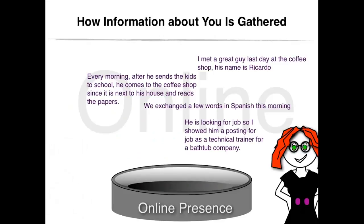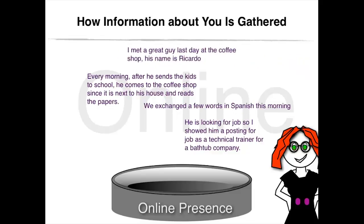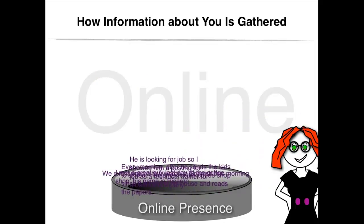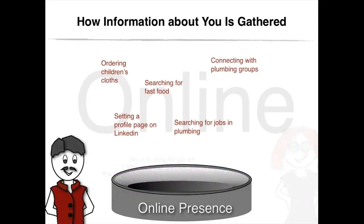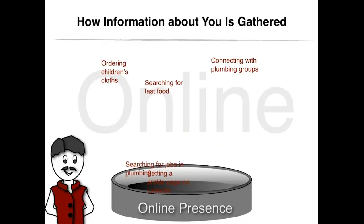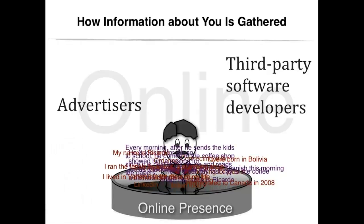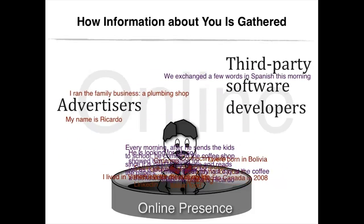On the other hand, any online user can share correct or incorrect information about you. He or she could, for example, tag you in a photo or add your name to an event without you knowing. In addition to these two forms of information diffusion, the history of the websites you visited, items that you have bought, movement between websites, and more, are electronically tracked. In other words, your online behavior is monitored and could be viewed, in addition to all the aforementioned information, by advertisers who are interested in your personal information so they would be able to better direct their ads to the products that you might be interested in. Third-party software developers could also access your information to personalize their applications.